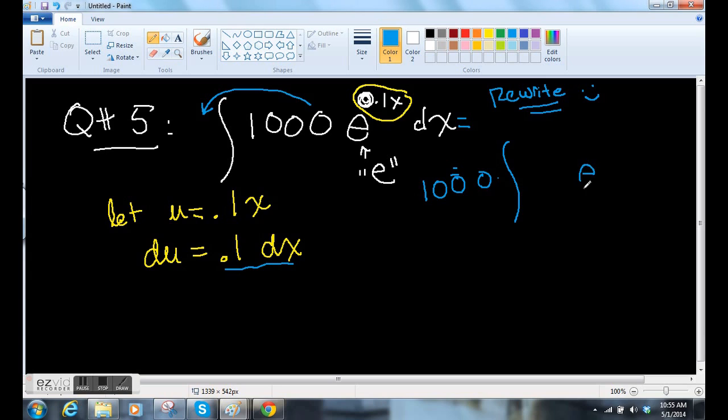OK. I like the e to the 0.1x. That's fine. But what I want here is a 0.1. But again, similar to the 12 before. If I multiply this times 0.1 out in front, I have to divide by 0.1. OK. Because if I'm multiplying in front, I have to also divide by 0.1. So this whole thing looks like, if you rewrite it, looks like the integral of, there's actually a 10,000 out in front. 10,000 is 1,000 divided by 0.1 because you're dividing by a decimal.